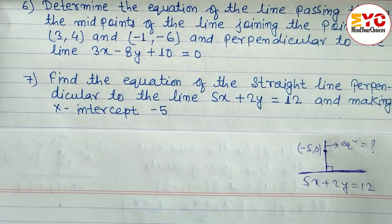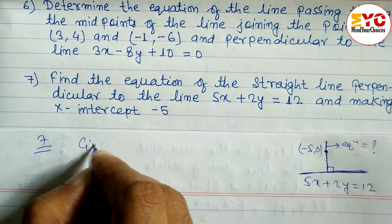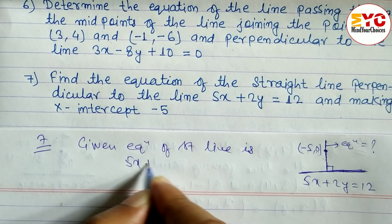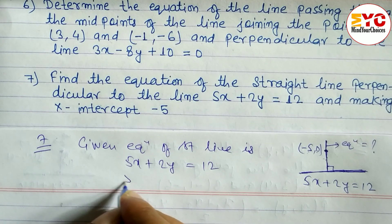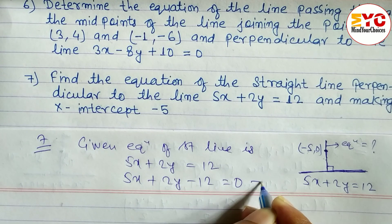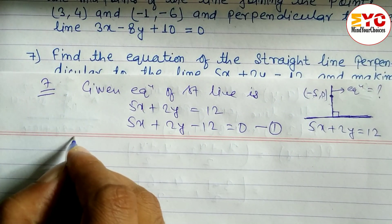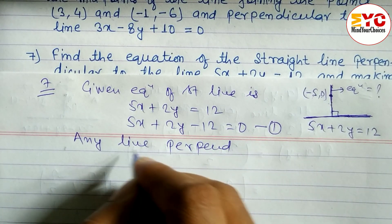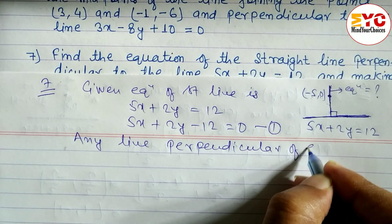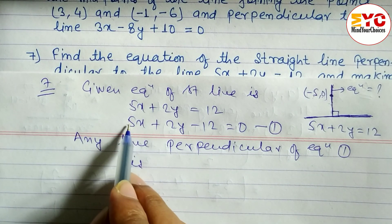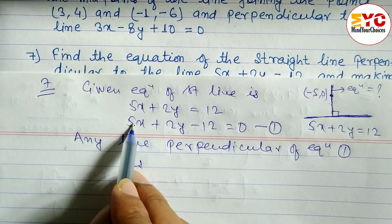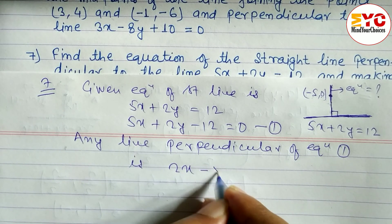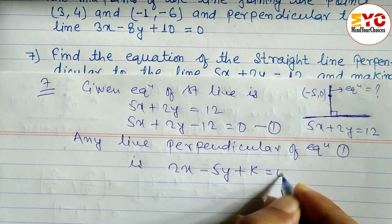We have two methods. I will show you an alternative method. The given equation of the straight line is 5x + 2y - 12 = 0 (equation 1). Any line perpendicular to this line is formed by swapping the coefficients: in place of 5 write 2, in place of 2 write 5, and change the sign between the x and y terms.